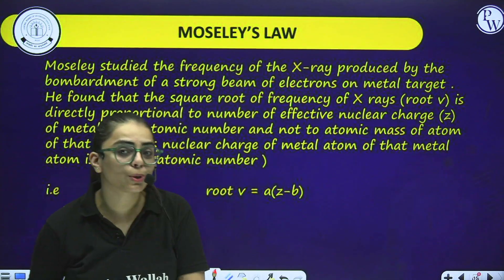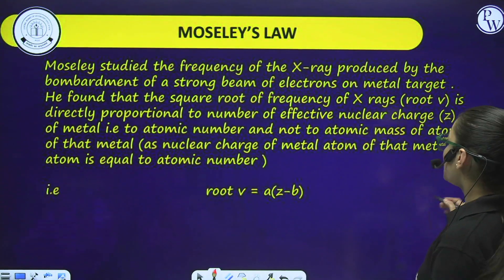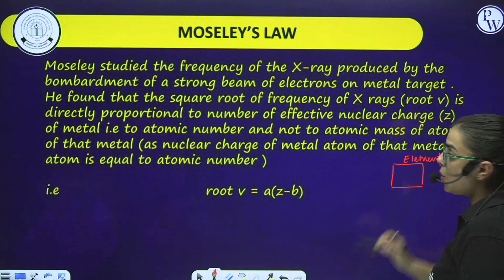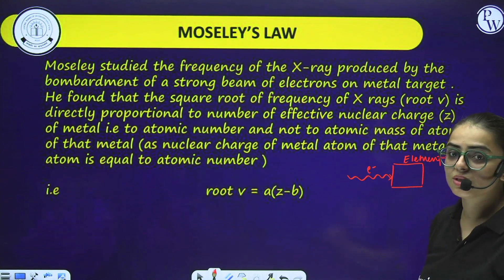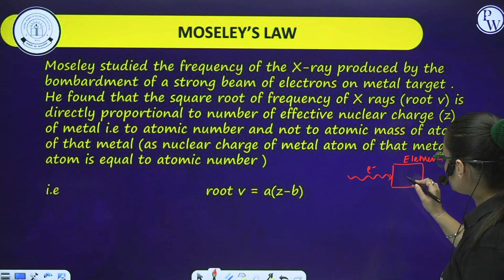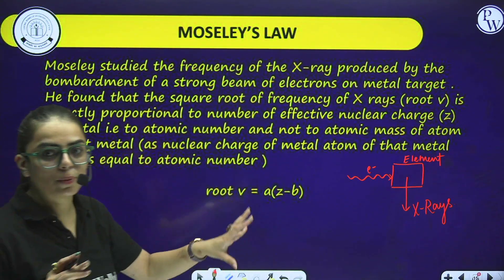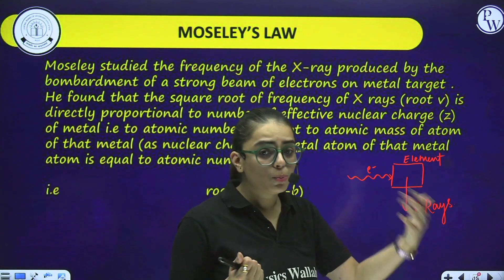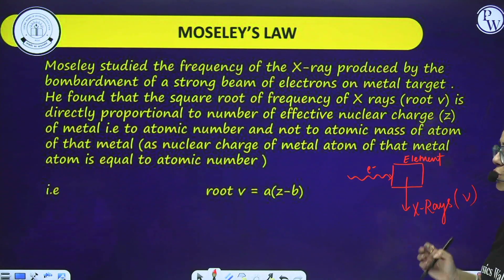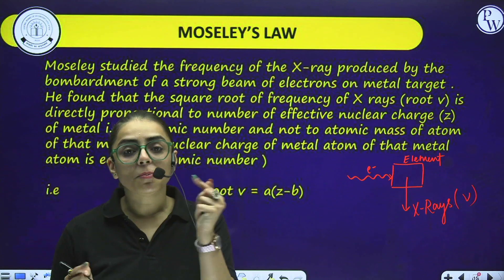Now we start with Moseley's law, since Mendeleev's periodic law failed. According to Moseley, he took a metal element and bombarded electrons on its surface. When he struck electrons on different metals, X-rays were emitted with certain frequencies. He plotted the graph of the square root of frequency against atomic mass - the curve was not linear. Then he replaced atomic mass with atomic number and plotted root of frequency against atomic number - a straight line was observed. That means the properties are a periodic function of atomic number, not atomic mass.